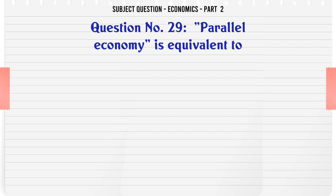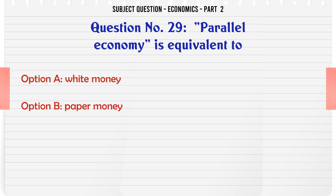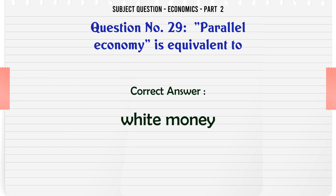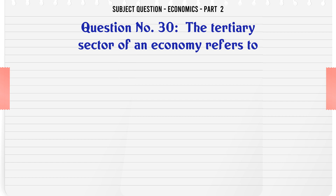Parallel economy is equivalent to: A. White money. B. Paper money. C. Black money. D. Bank money. The correct answer is: White money.